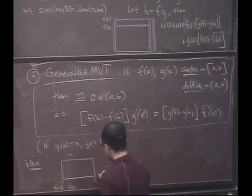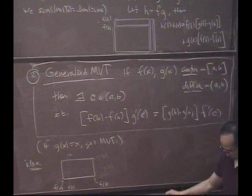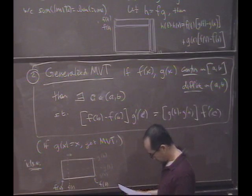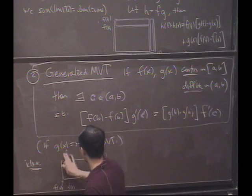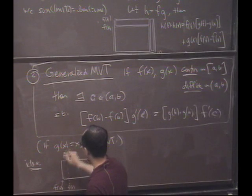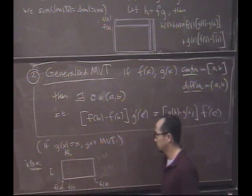Suppose simultaneously I have another knife whose position is given by g of t. Also at time a, it's at the bottom and at time b, it's at the top. Okay. So this is the knife. I'll call this knife big A, I'll call this knife k and call this knife l.